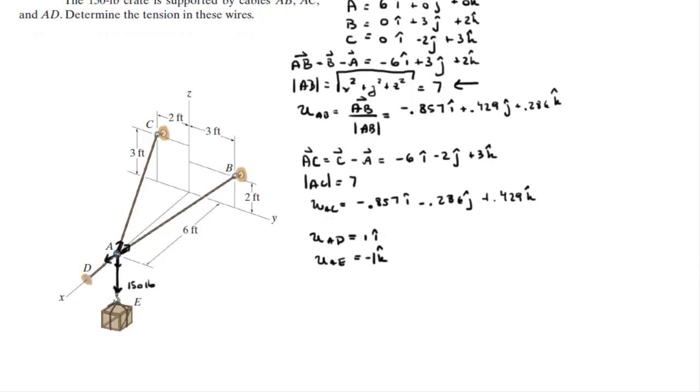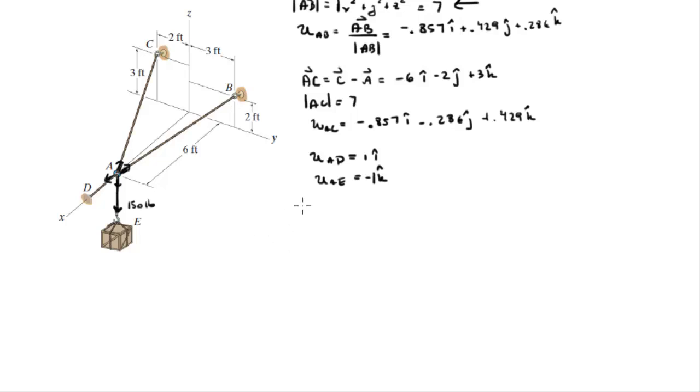So now what I'm going to do is I'm going to build some sort of a little table. Basically, you know that you have four vectors acting into this ring. You got a, b, a, c, a, d, and a, e. And a, e we know is 150 pounds.